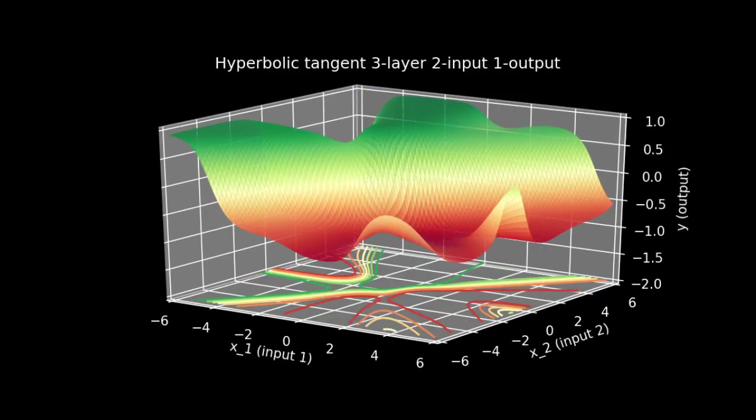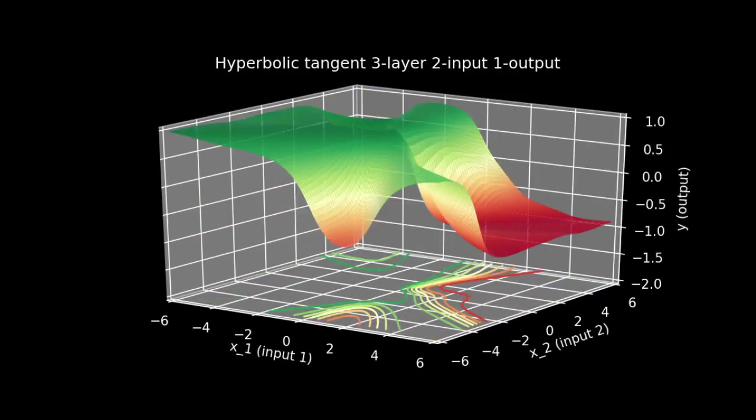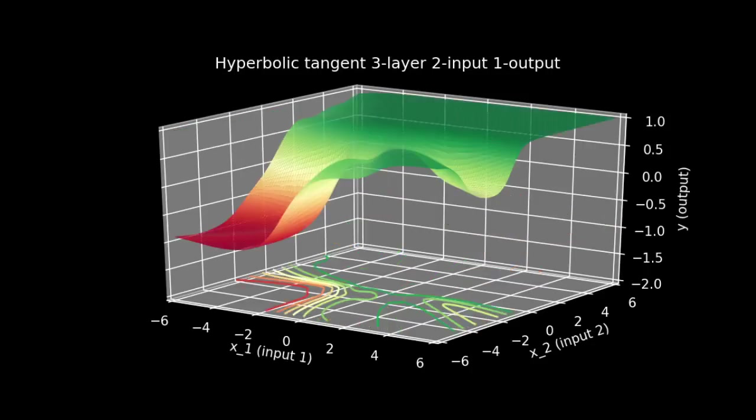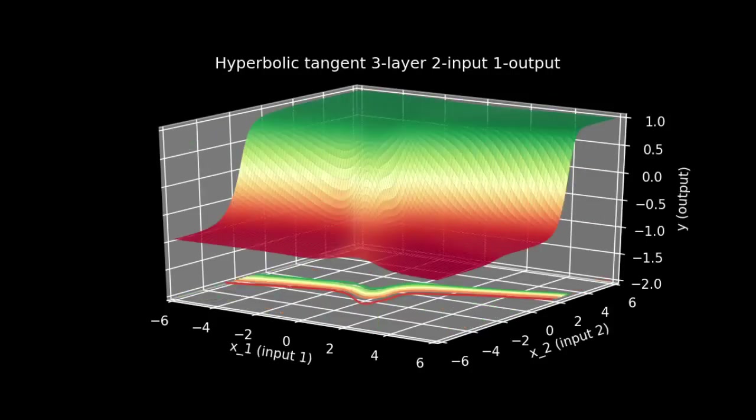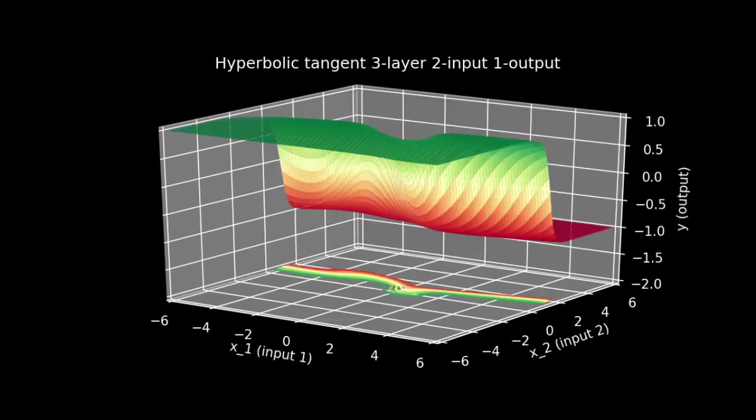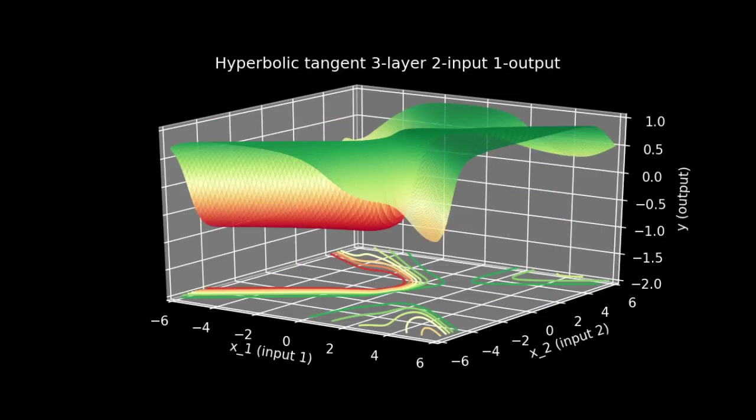This is where it gets really fun. With multiple inputs, multiple layers, and nonlinear activation functions, neural networks can make really crazy shapes. It's almost correct to say that they could make any shape you want. It's worth taking a moment though to notice what its limitations are.